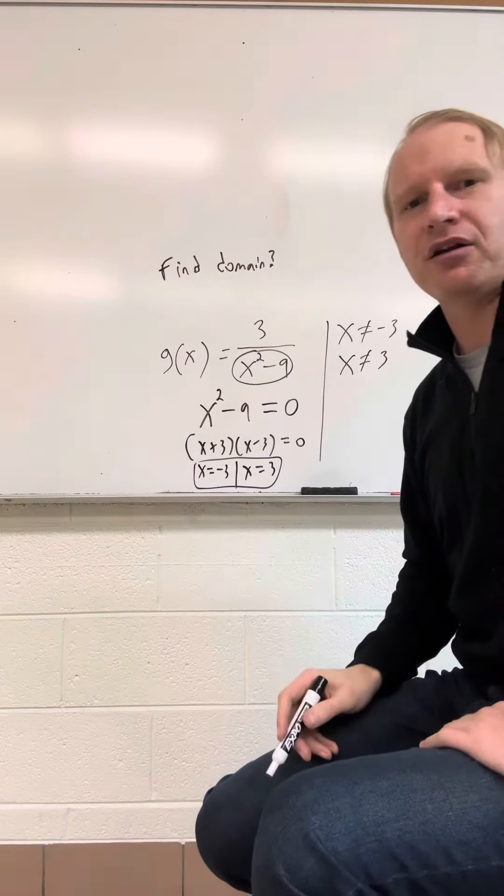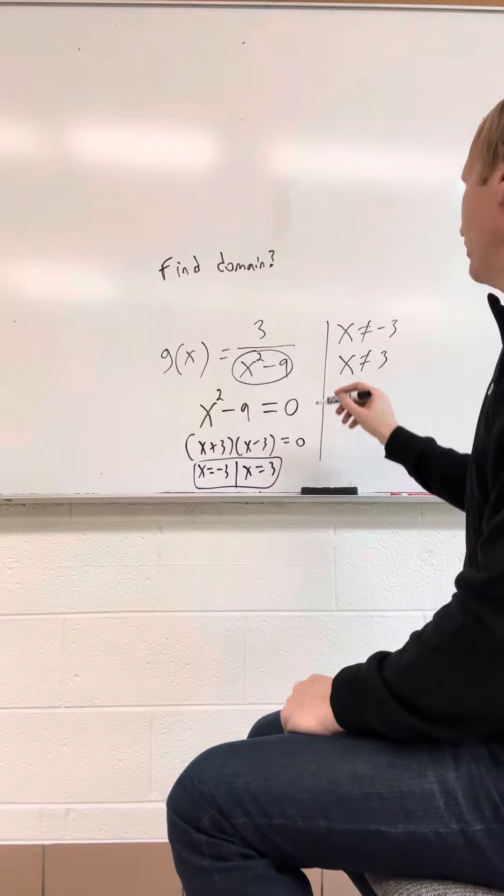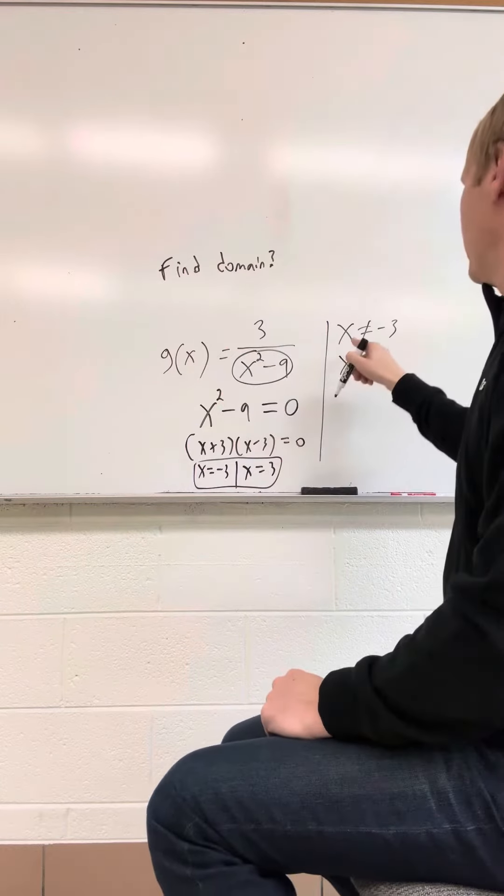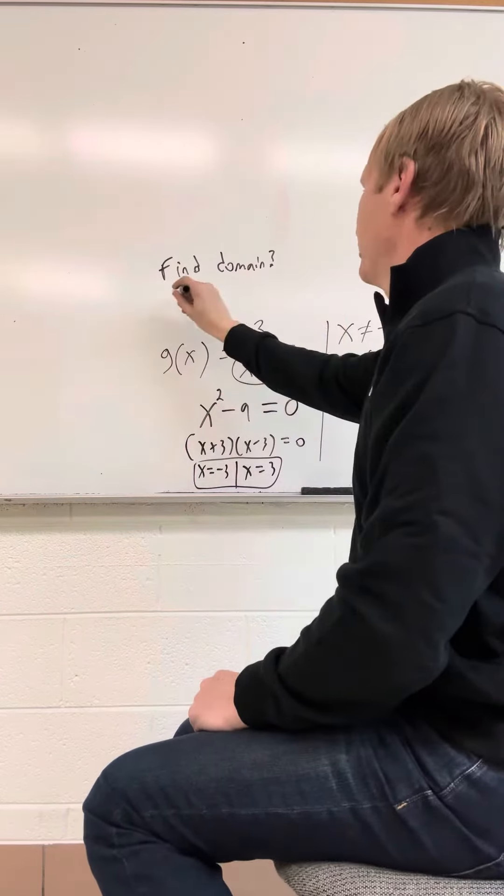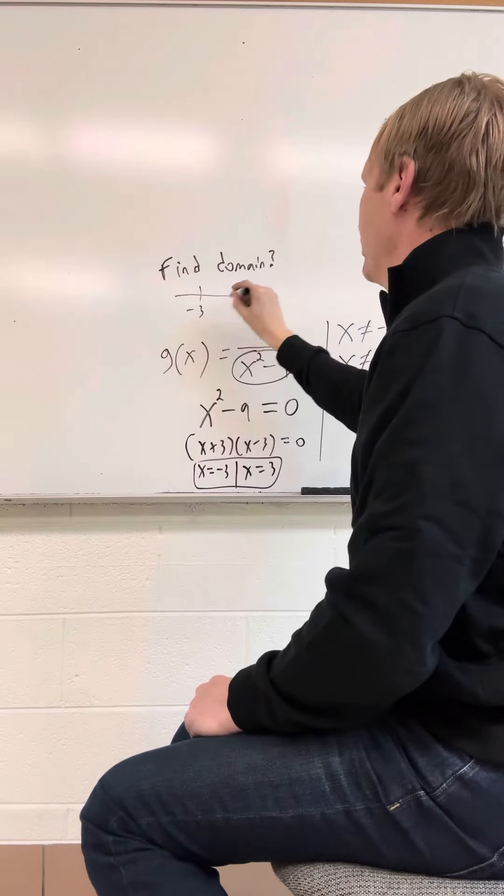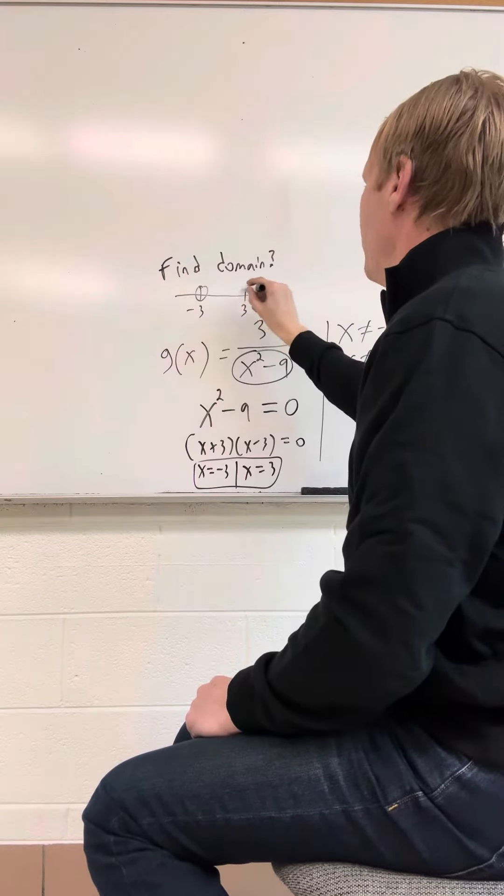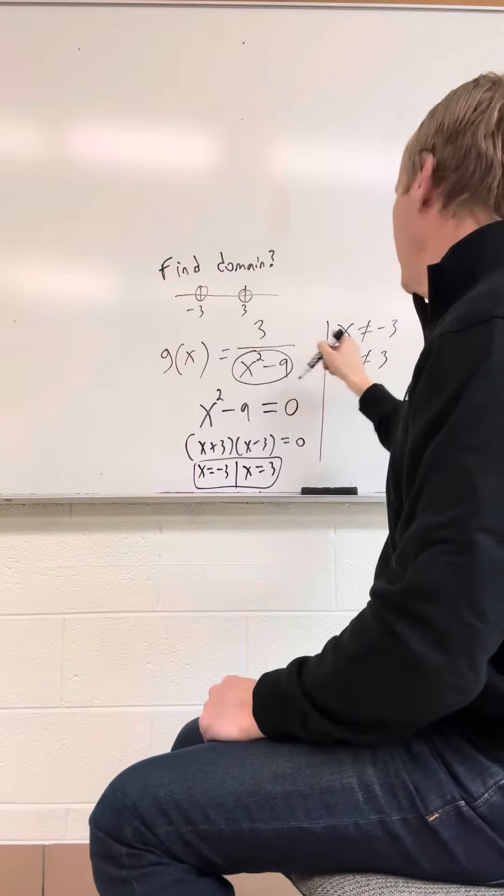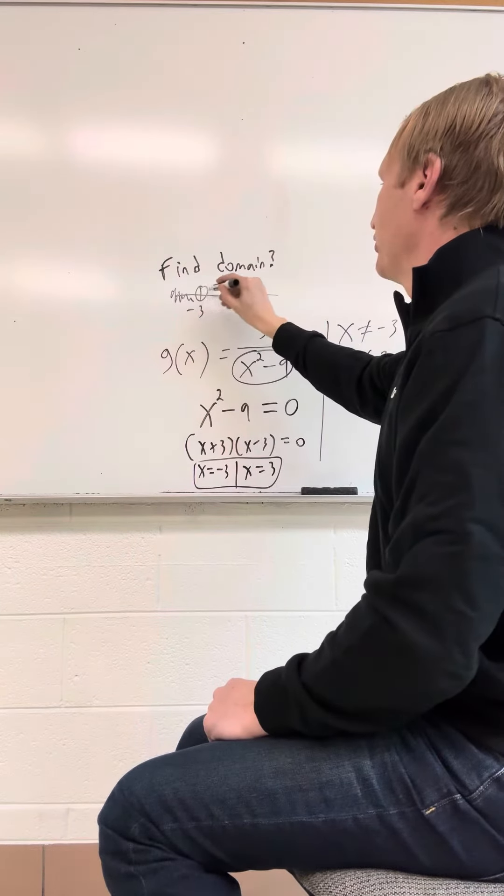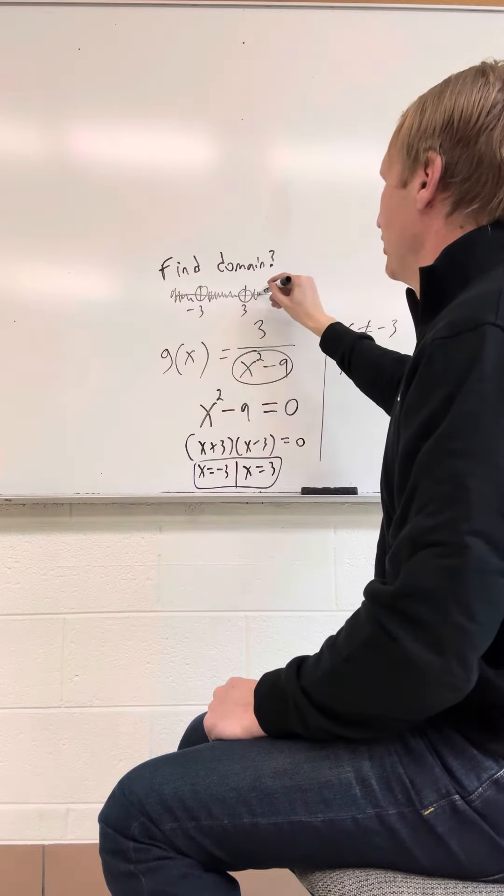So how would you write that in interval notation? Well, in interval notation, if we're graphing this, right, we have negative 3 and 3. So we have open circles there, because that's what it can't equal, and it can equal anything else but those numbers. So we're going to shade in everything.